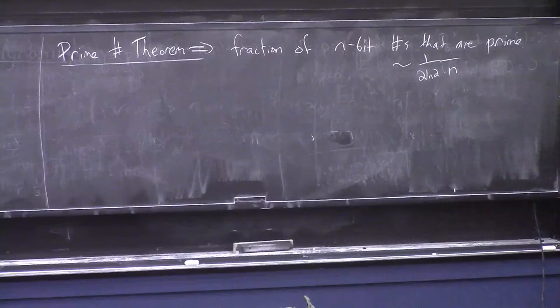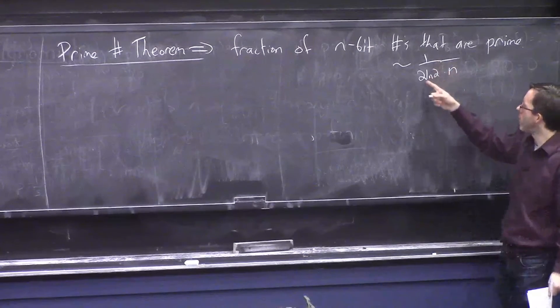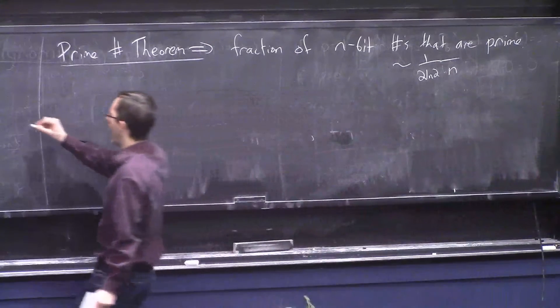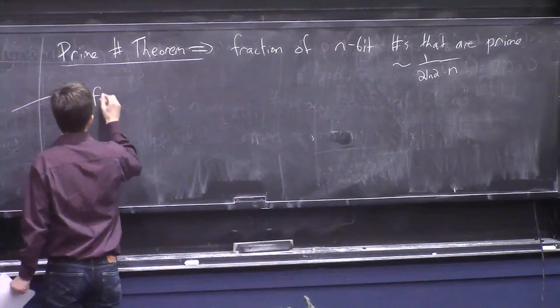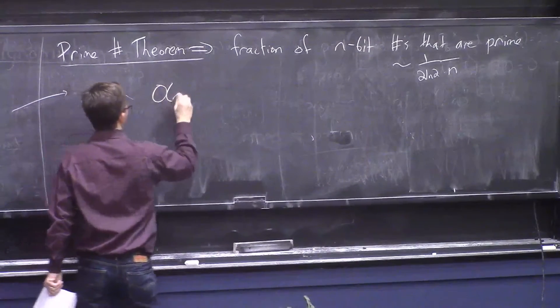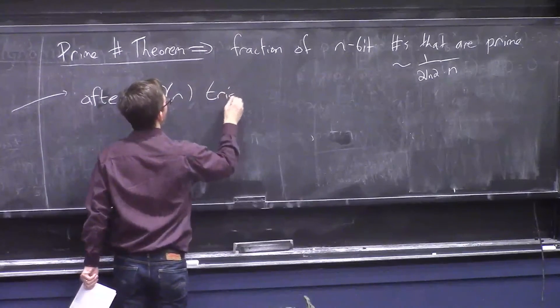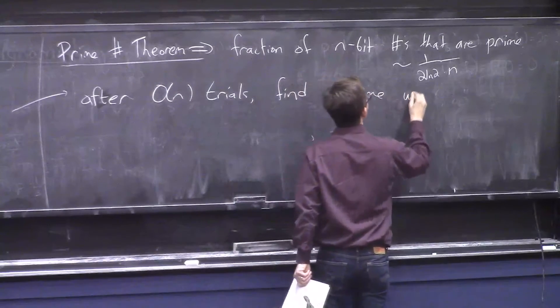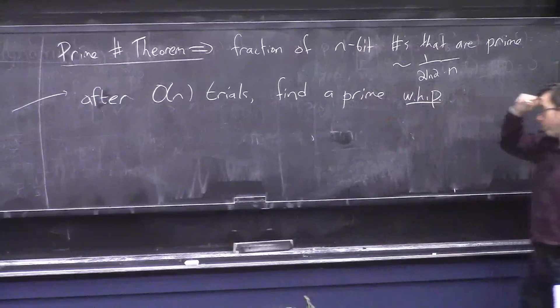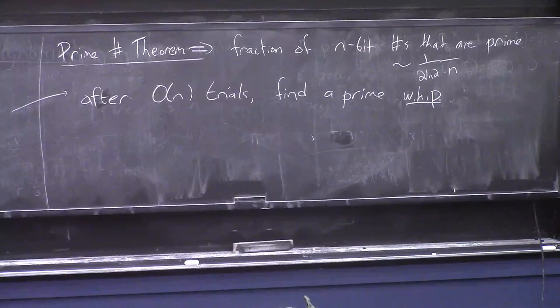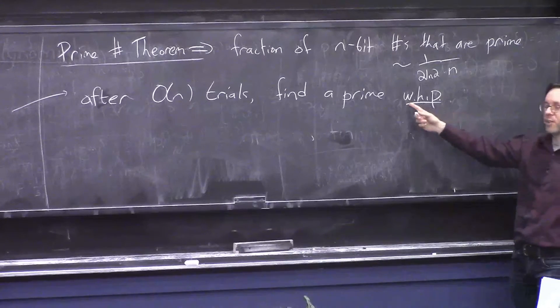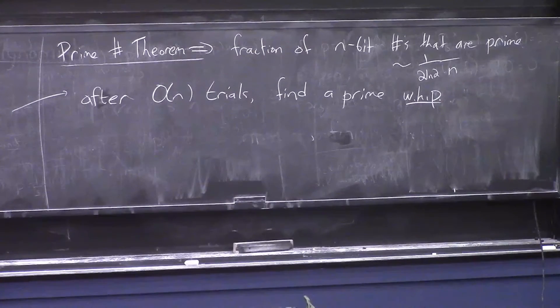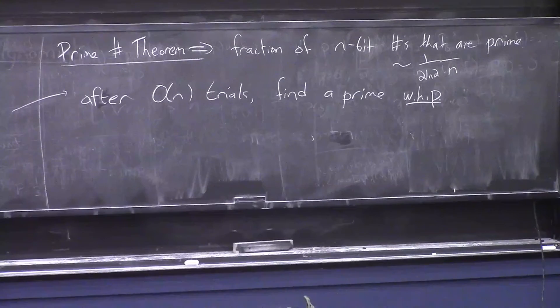And I think on your homework, you showed that it's at least like 1 over 2n. But anyway, I mean, in turn, this implies that, like, after order n trials, you'll find a prime with high probability. This is a comment that has nothing to do with fields and polynomials, but you'll often see this phrase, W-H-P, which means with high probability.